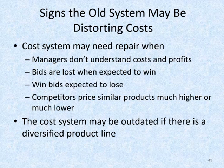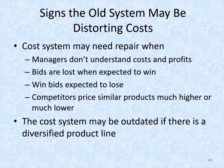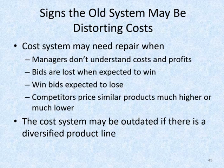Signs that the old system may be distorting costs include: managers don't understand costs and profits, you lose bids you expected to win, or you win bids you expected to lose — both indicators that your pricing may be off. Additionally, if competitors price similar products much higher or much lower, that's an indicator your cost data is out of date. A costing system may be out of date if you have a more diversified product line than you once did, or if you've re-engineered your process but not the accounting system.